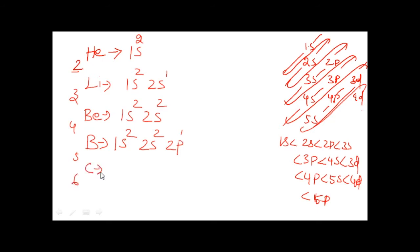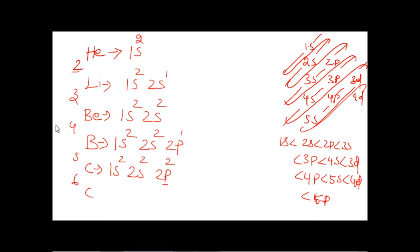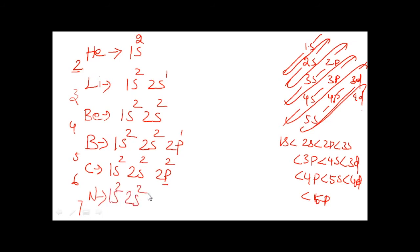For carbon (Z=6): 1s² 2s² fills 4 electrons, balance 2 electrons. Next highest energy is 2p; maximum is 6, balance only 2. Configuration: 1s² 2s² 2p². For nitrogen (Z=7): 1s² 2s² fills 4 electrons, balance 3 electrons go to 2p. Configuration: 1s² 2s² 2p³.